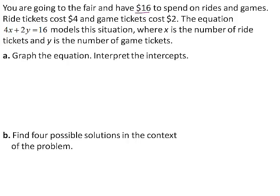You are going to the fair and have $16 to spend on rides and games. Ride tickets cost $4 and game tickets cost $2. The equation 4x plus 2y equals 16 models this situation, where x is the number of ride tickets and y is the number of game tickets.